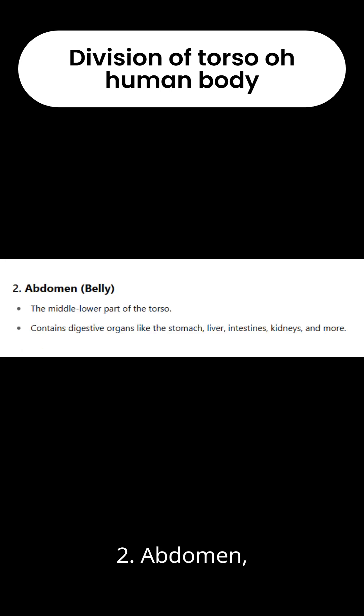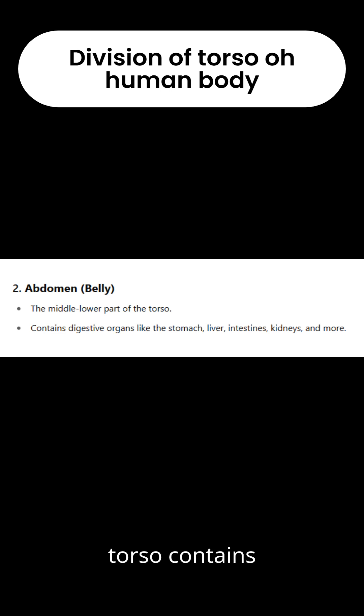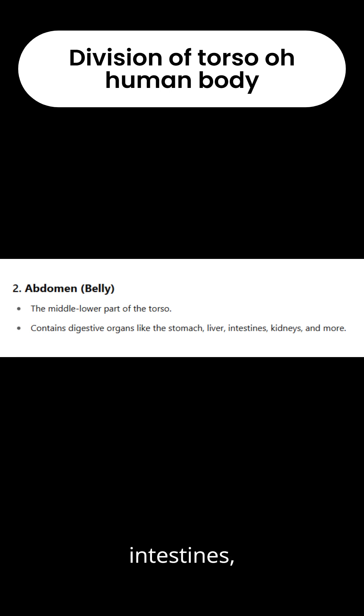2. Abdomen (belly). The middle lower part of the torso contains digestive organs like the stomach, liver, intestines, kidneys, and more.